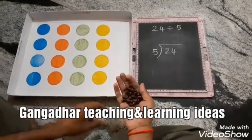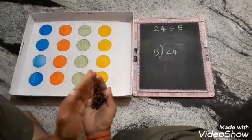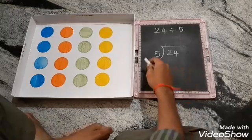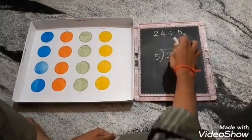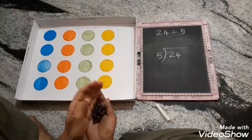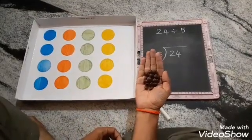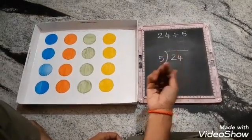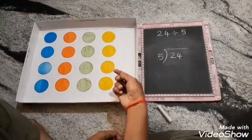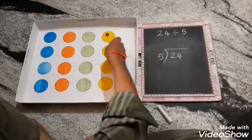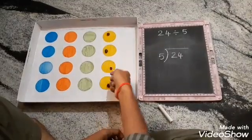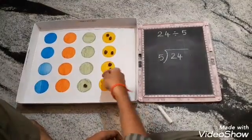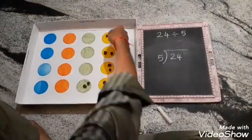Divisions easy method: take tamarind seeds. 24 divided by 5. You have to take 24 tamarind seeds and distribute them into 5 circles — placing one seed at a time into each circle: 1, 1, 1, 1, 1; 2, 2, 2, 2, 2; 3.